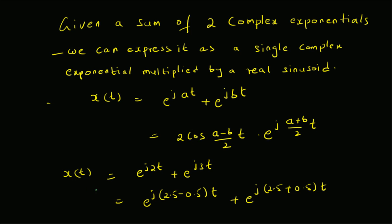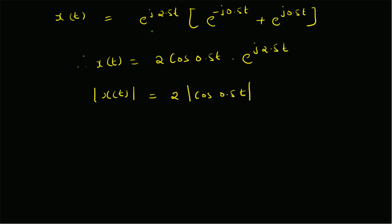For the simple example x of t equal to e^(j·2t) plus e^(j·3t), we write 2 as 2.5 minus 0.5 and 3 as 2.5 plus 0.5, take e^(j·2.5·t) as the common term, and then apply Euler's formula for cosine.